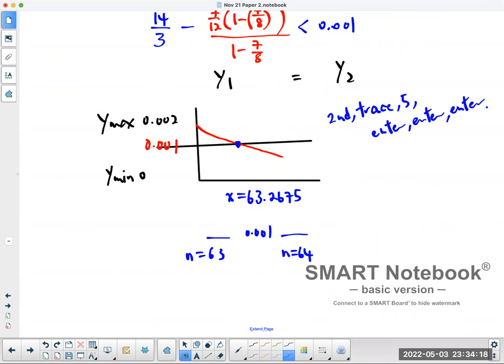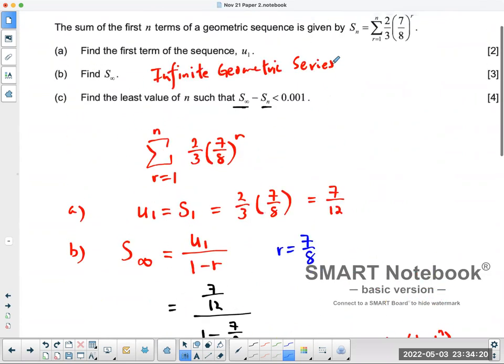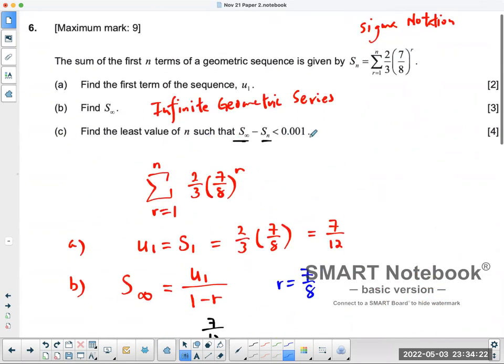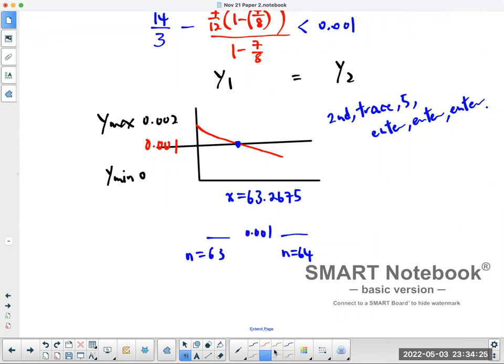So the question says, when is the first term that's going to be less than 0.001. So the answer would be the 64th term. n equals to 64 would be the correct answer. So I'm going to choose two marks. Thank you.